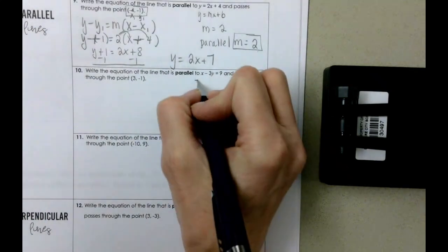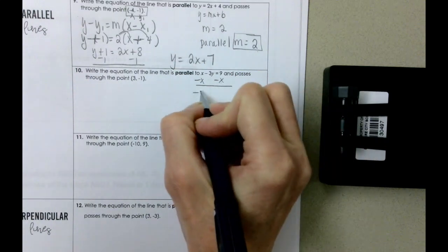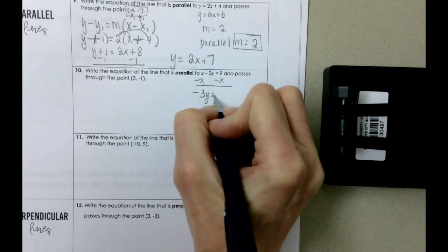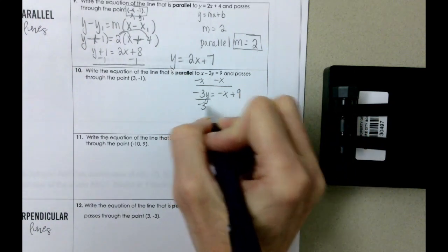So that means that we're going to have to solve for y. So we're going to subtract x from both sides and we get negative 3y equals negative x plus 9. Divide everything by negative 3.